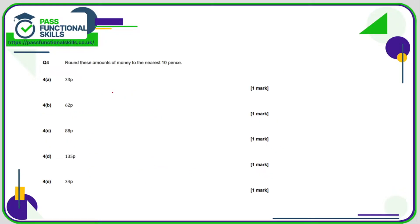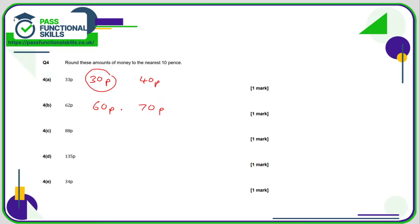Question four: rounding to the nearest 10p. 33p is between 30p and 40p; since 33 is less than 35 (the halfway point) we round down to 30. 62p is between 60 and 70 pence; 62 is less than 65 which is the halfway point between 60 and 70, so we round down to 60.